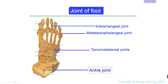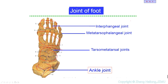Now let's see the other joints of the foot. Here is the ankle — here is the tibia, here is the fibula, and this one is the talus. Below the talus, there are seven tarsal bones, and between the tarsal bones are the intertarsal joints. Next are the metatarsal bones, and between the tarsal and metatarsal bones are the tarsometatarsal joints. Between the metatarsal bones and the phalanges are the metatarsophalangeal joints. Within the phalanges are the interphalangeal joints — the first toe has only one interphalangeal joint, while the others have two.